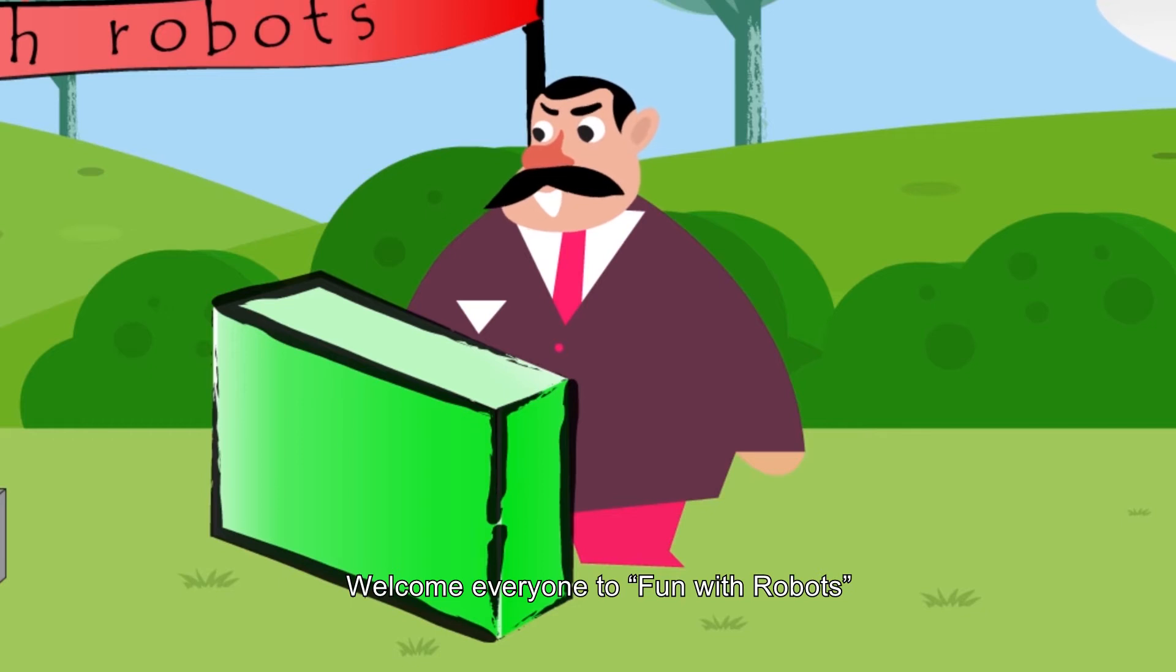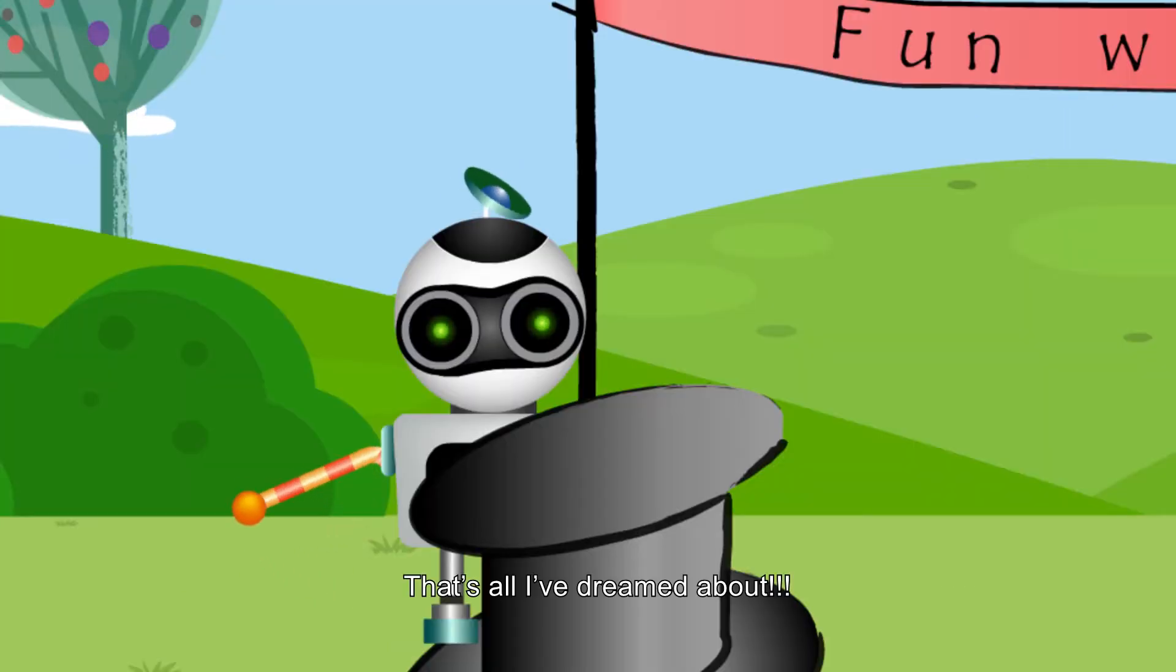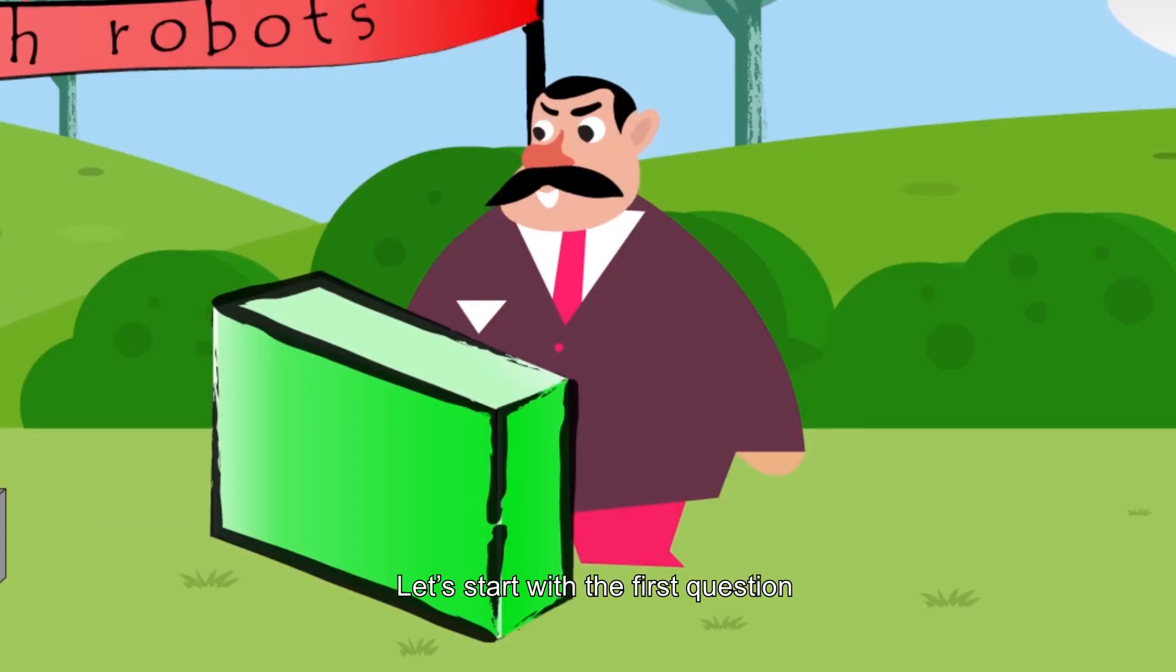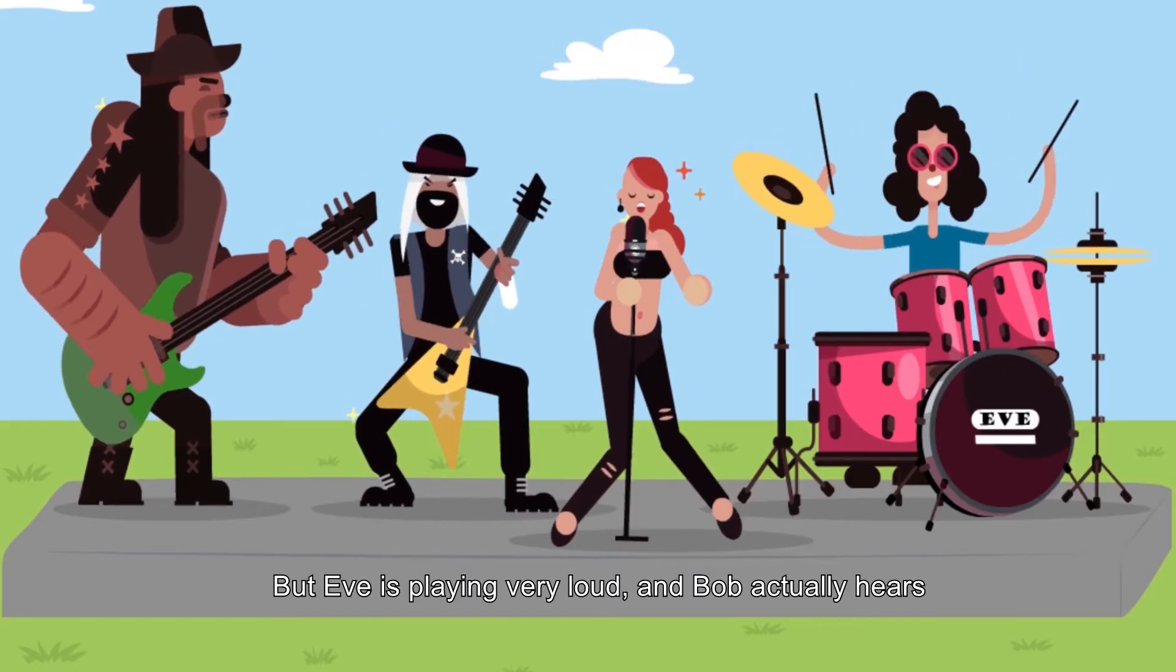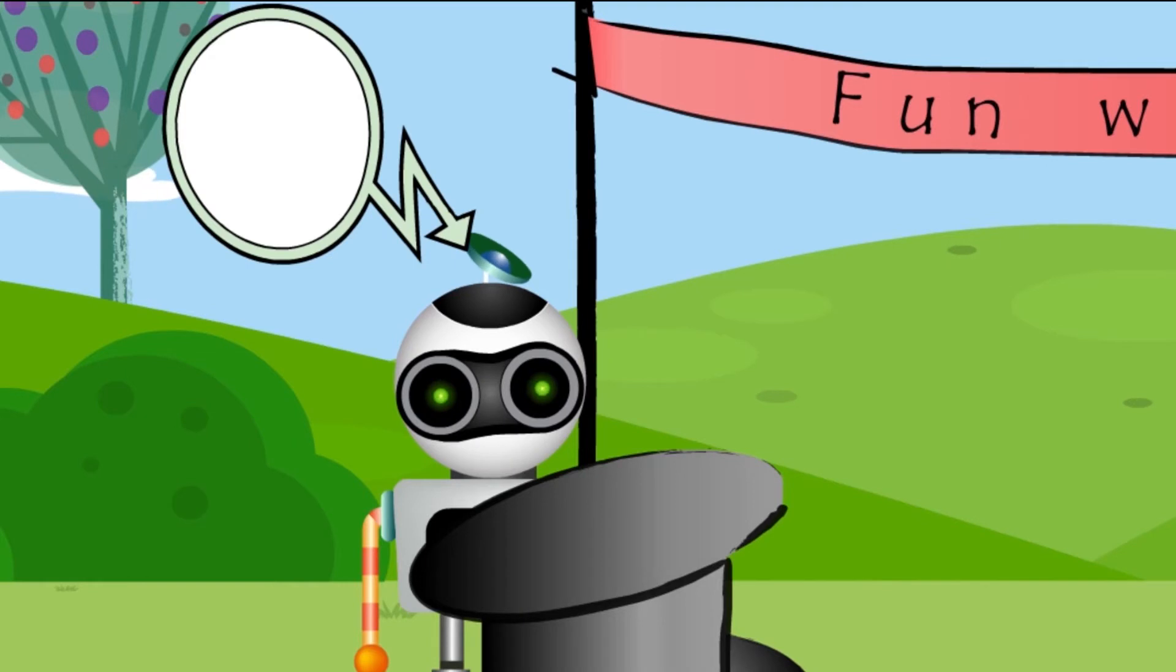Welcome everyone to Fun with Robots. Today, competing for 1 million liters of oil, we have Bob the Robot. That's all I have dreamed about. Let's start with the first question. What does a thirsty person need? Water. Water. But Eve is playing very loud, and Bob actually hears water.